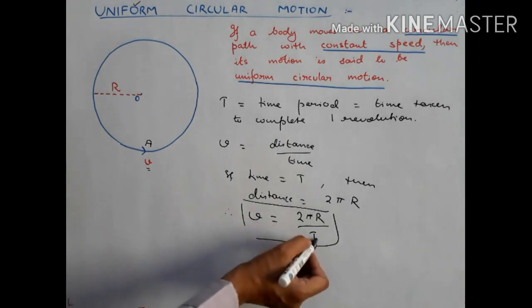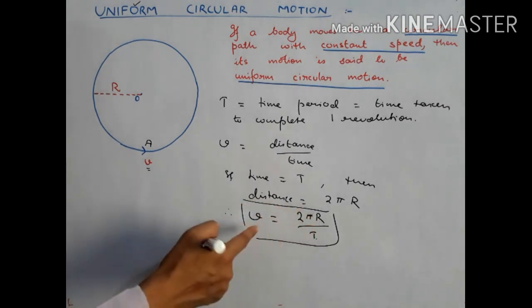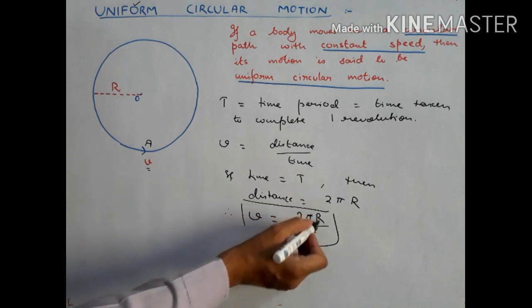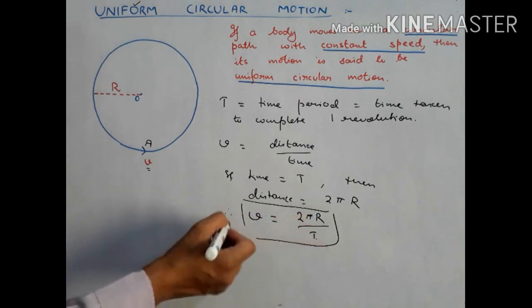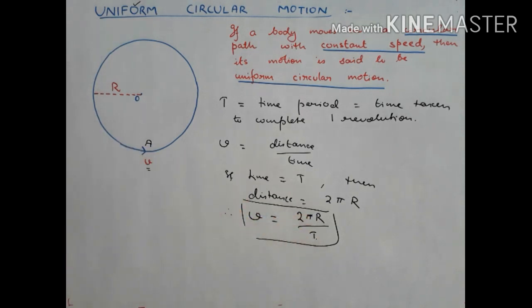If T and R are given you can find V, and out of these three parameters — V, R, and T — if any two are given you can find the third.